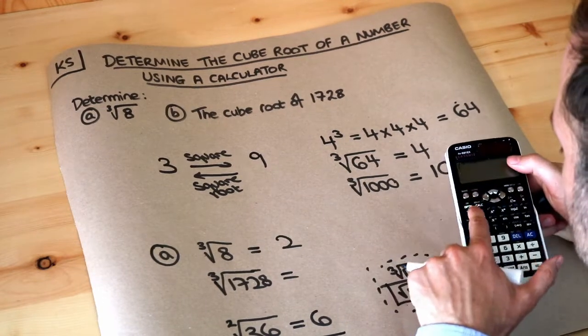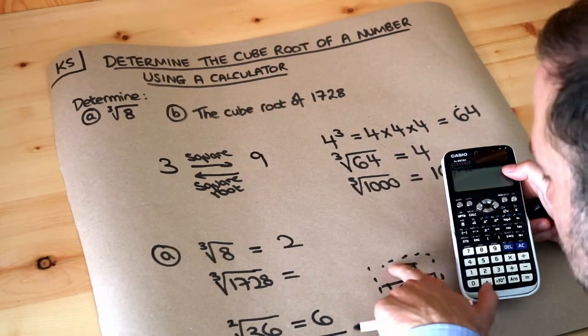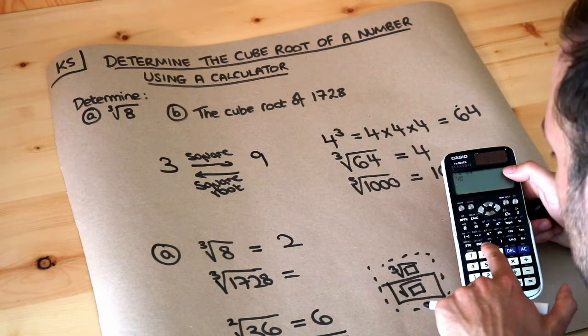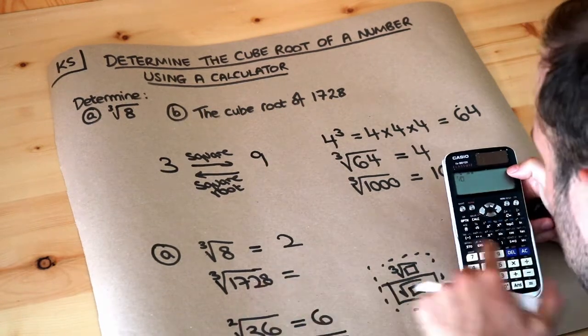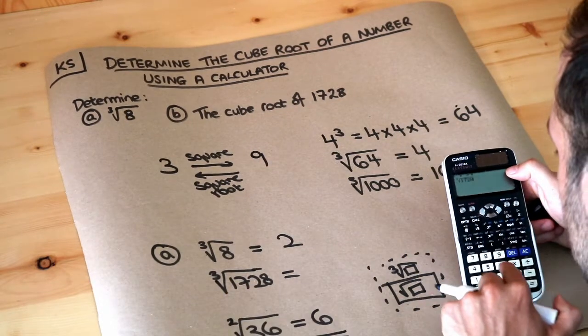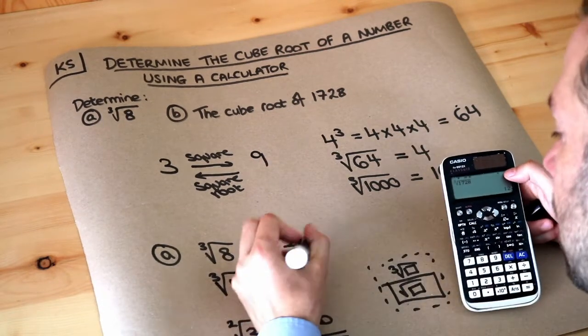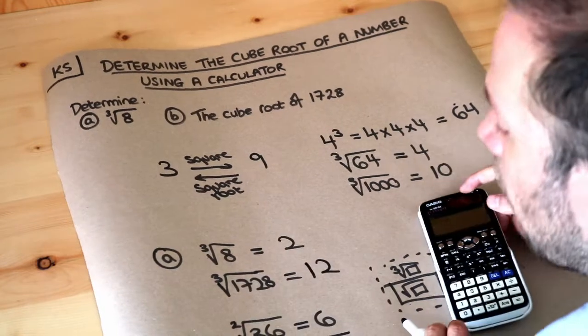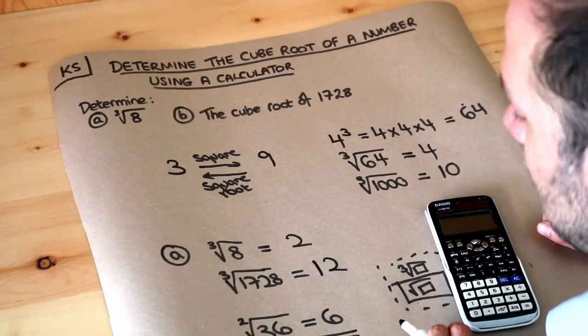So if we press shift and then the square root button, because we actually want the cube root, then we'll have a little box. I want to put the 1728 in so it looks exactly like what I have here, and press equals. Then it gives you 12. So it seems that 12 cubed gives you 1728.